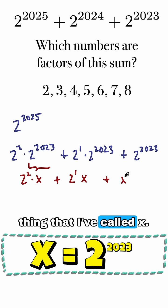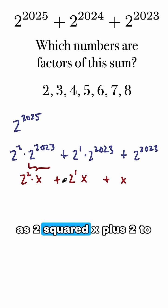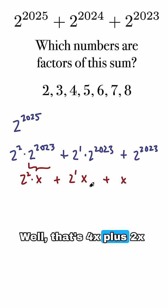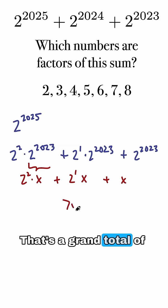And then the third term is just like an imaginary 1 as a coefficient here. It's just one of that thing that I've called x. So this problem, really, I could think of it as 2 squared x plus 2 to the first x plus x. Well, that's 4x plus 2x plus x.